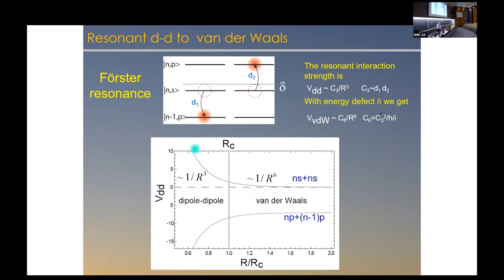There's a crossover distance where you transition from one over R cubed to one over R to the sixth behavior. This happens because the interaction is resonant if those spacings are identical, but in fact those spacings are not identical. The energy separation of atomic levels — the Bohr energies go as one over N squared — so the separation between neighboring levels at high N goes as one over N cubed, and it depends on N. Plus any atom that's not hydrogen has a quantum defect, with additional atomic physics from the interaction of the Rydberg electron with the core of the atom, which additionally changes the separation of the levels.